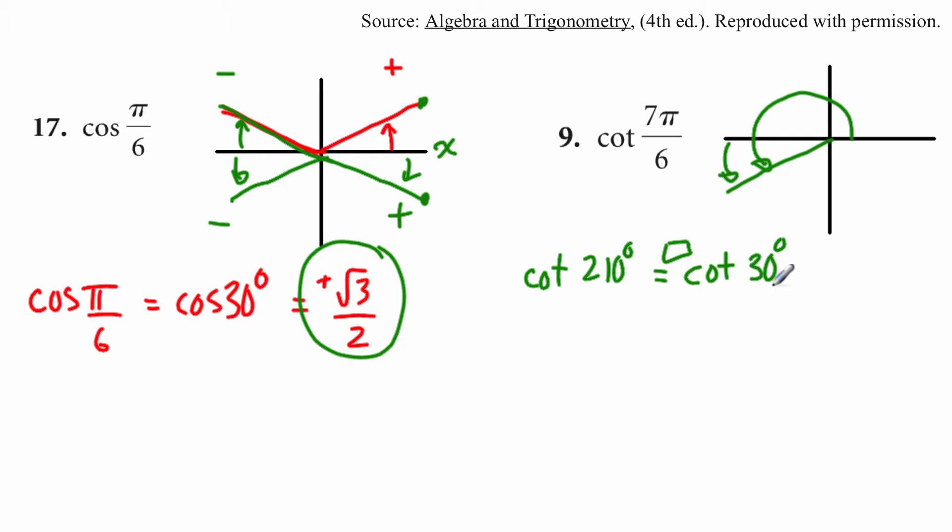Now cotan of 30 I can't do. I don't have that memorized. But if I flip that over, I do know what the tan of 30 is. I know that the tan of 30 is root 3 over 3. So the cotan of 30 has got to be the flip of that. Instead of root 3 over 3, the cotan of 30 is the reciprocal of that, or 3 over root 3.